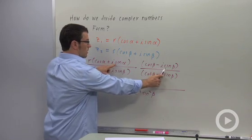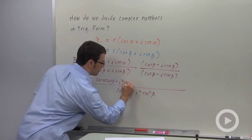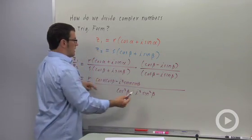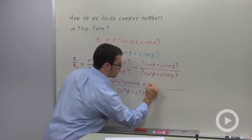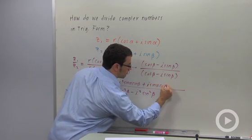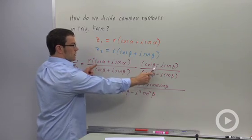Minus I squared sine alpha sine beta. And then I sine alpha cosine beta. And minus I cosine alpha sine beta.